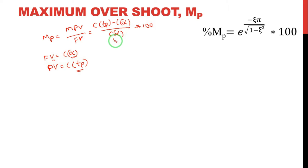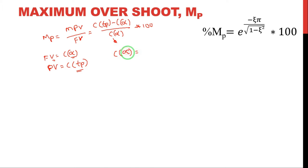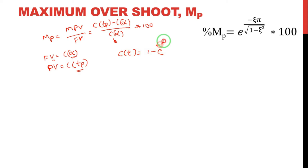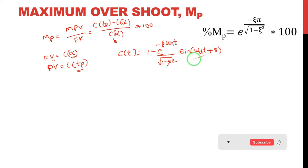The response at peak time is called the peak value, and the response at infinity is called the final value. Multiplied by 100 gives the percentage maximum peak overshoot. Now take the output response of the underdamped system: c(t) = 1 − e^(−ζωₙt) / √(1−ζ²) · sin(ωdt + θ). This is the basic formula for the underdamped system output response.